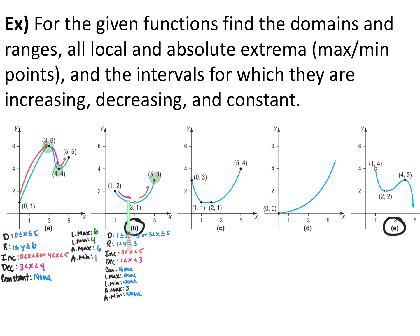Graph B is a bit tricky because there's a hole at the point (3, 1) — that point has been taken out of the graph. For domain, x starts at 1 (included) and goes up to 3 (not included), then continues from just after 3 to 5 (included): 1 ≤ x < 3 or 3 < x ≤ 5. You could also write 1 ≤ x ≤ 5 with x ≠ 3.